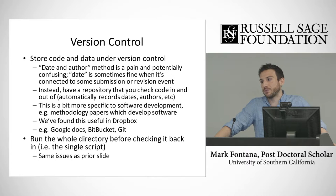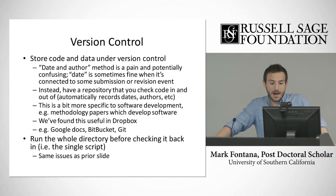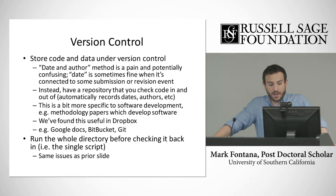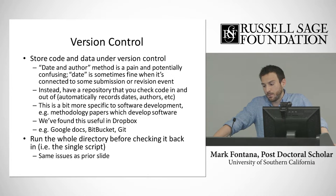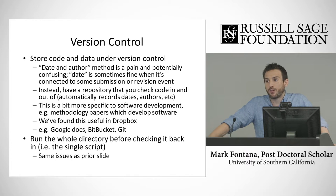Instead, it's much wiser to have a centralized repository that you check code into and out of that automatically records the versioning for you — it keeps track of exactly who edited what and when, and keeps track of what the files looked like at every step along the way. This is a bit more specific to software development, using Git or Bitbucket or something like that. We've found personally that Dropbox does a pretty good job of version control, such that you're not renaming files by the date-and-author method — you allow Dropbox to overwrite, you load up your new file, and it keeps track of various versions in the background.